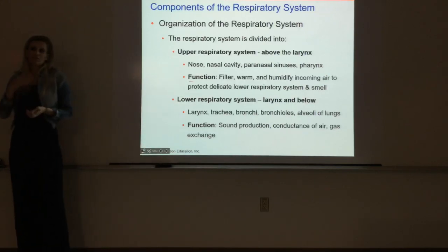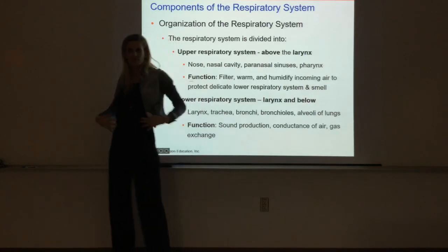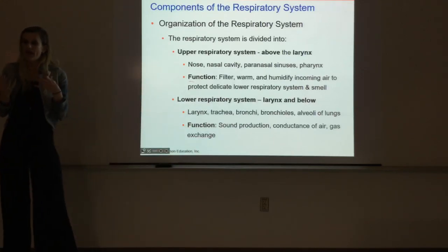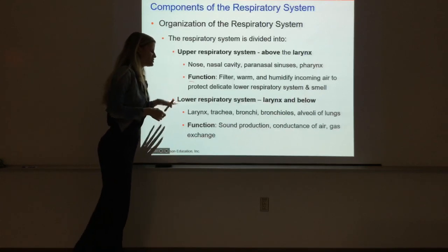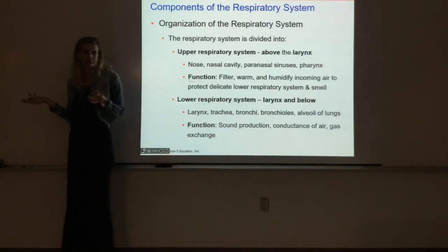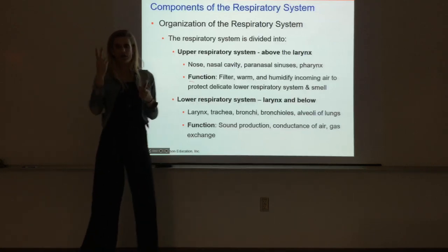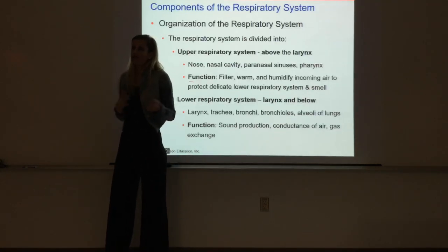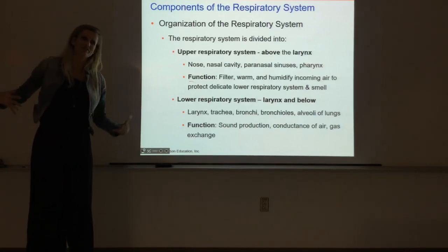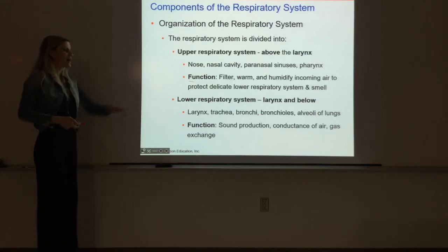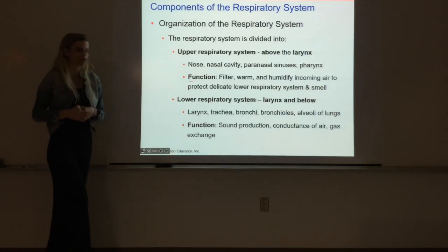The lower respiratory system includes the larynx and below - the larynx, the trachea, each of the three types of bronchi, the bronchioles, and then the actual alveoli themselves deep in the lungs. The main purposes of the lower respiratory system are sound production in the larynx, conduction of air, and actual gas exchange. Conduction is just the movement of air down the trachea, through the bronchi, through the bronchioles, and eventually to the alveoli. Gas exchange refers to oxygen going into the bloodstream and CO2 leaving the bloodstream into the air.